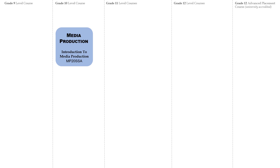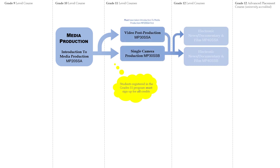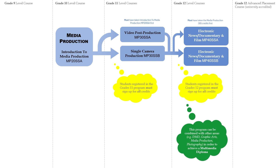Media Production is an optional course that can be taken starting in Grade 9 or 10. A cluster of Grade 11 level courses must be taken in this program. Grade 12 courses are also mandatory in this program based on the previous cluster or prerequisites. This program can be combined with other areas — for example, Digital Media Design, Graphic Arts, and Photography — in order to achieve a Multimedia Diploma.